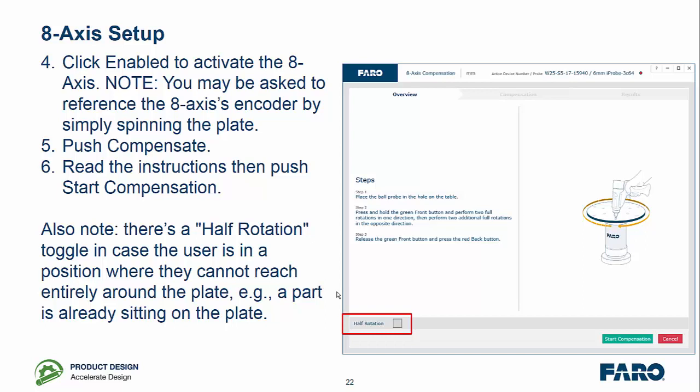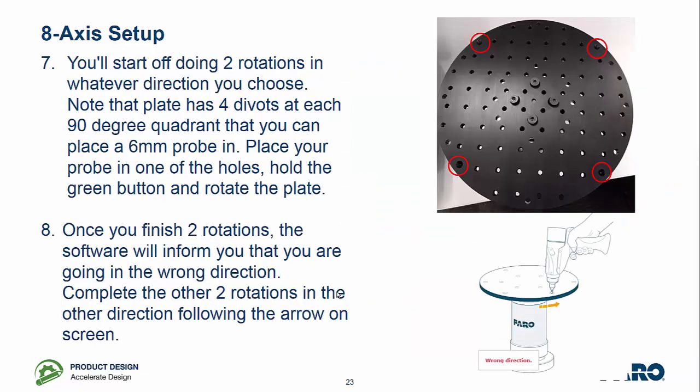So we push the Compensate button and then simply read the instructions. Note, we also have a half rotation option here and this is for areas where we might already have a part located on the plate and we physically can't do two full rotations.